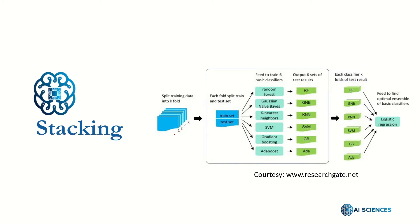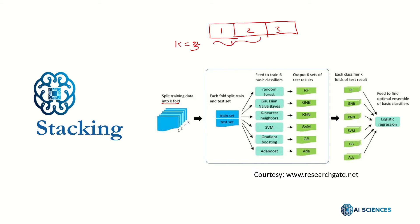In stacking, if you apply k-fold cross validation, the original data is split into different folds. Let's say k equals 3 — that means three splits: one, two, and three. For the first fold, one and two combine as training data and three acts as test or validation data. For the next fold, one and three are combined for training and two acts as validation. And for the third fold, two and three combine for training and one acts as validation.